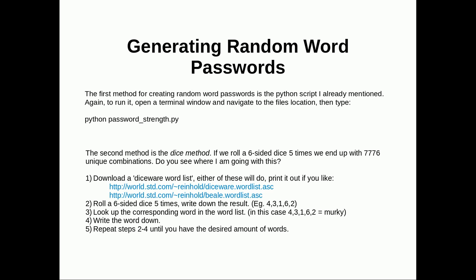Generating random word passwords. The first method is the Python script I showed you — you could also make your own script. You basically just get the dictionary list from the system and randomly select from it. The second method is a manual dice method: you get a regular six-sided dice and roll it five times, giving 7,776 possible combinations which translate into words. First, download the diceware word list. Roll the dice five times, look up the corresponding word in the word list, then repeat until you have the desired number of words.